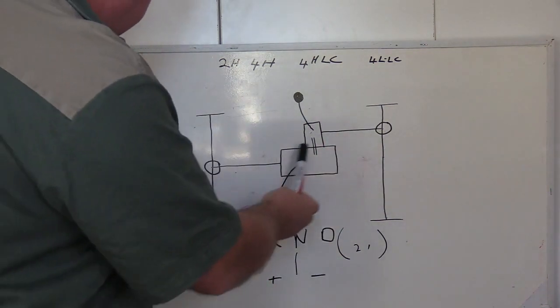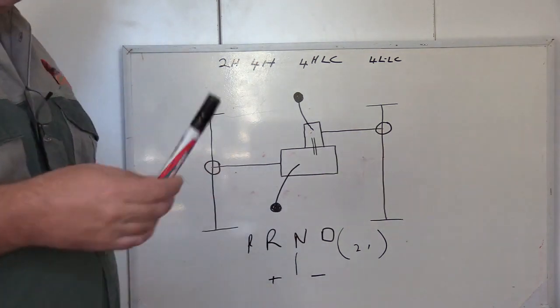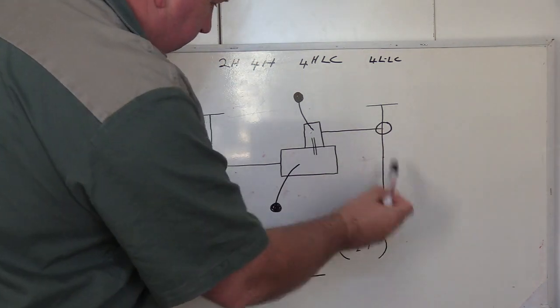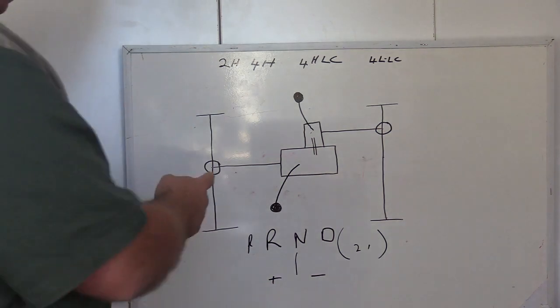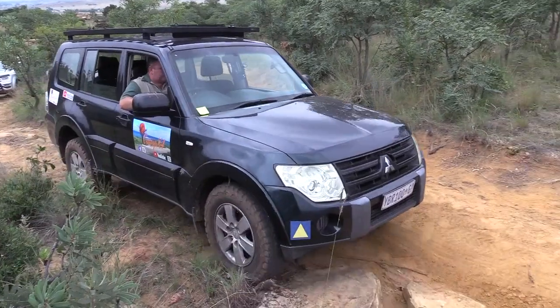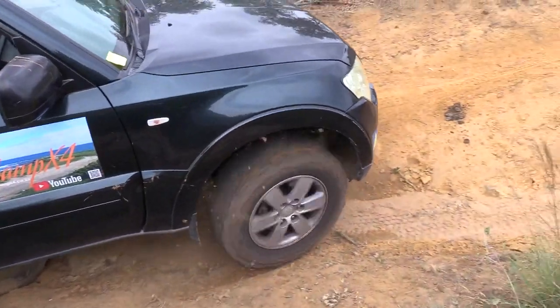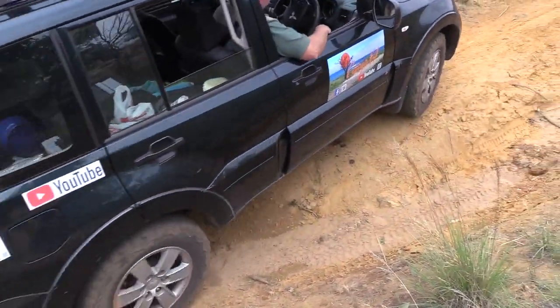Which means that this is open as well. So in theory, if I pick this one wheel up and I try and drive forward, the wheel that turns the easiest will spin and all the power will go to that wheel.